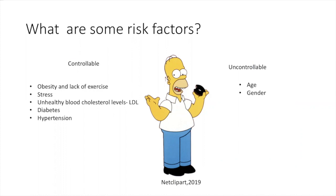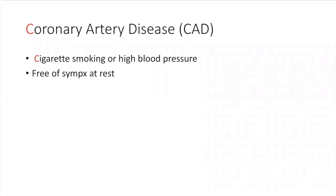What are some uncontrollable factors? Age and gender. We know that Homer is of age, which will affect him and give him a heart condition. Coronary artery disease — what happens? The arterial wall becomes injured due to cigarette smoking or high blood pressure. A patient with coronary artery disease may be free of symptoms at rest but develop angina. If Homer Simpson were to smoke, he would have this problem; however, we know that his lifestyle can lead to this.